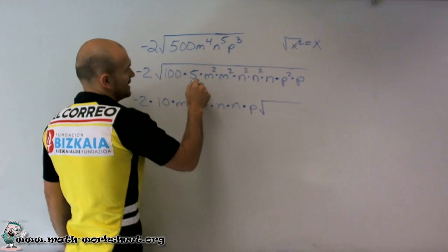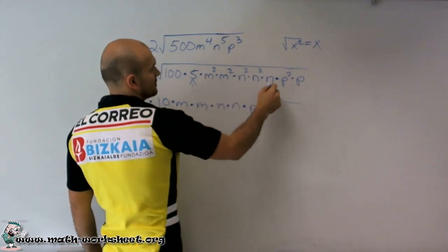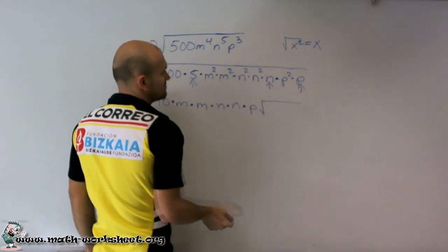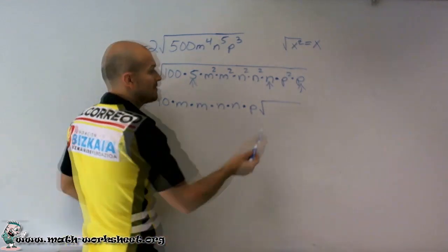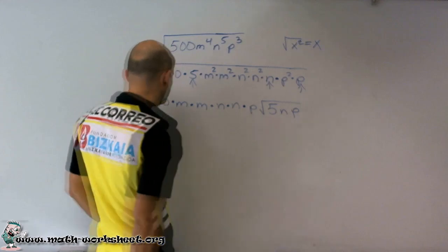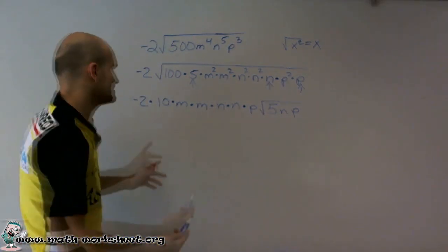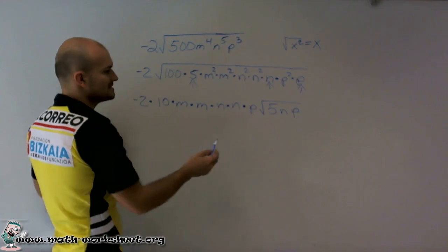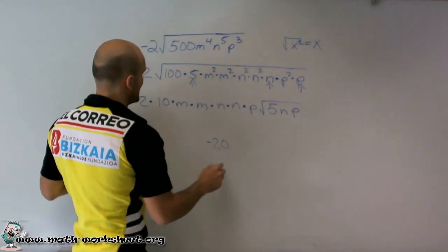Then what was left over? I have 5, this n, and this p. So those are going to remain under my radical symbol. So I have 5np. OK. So now we can go and simplify this again.